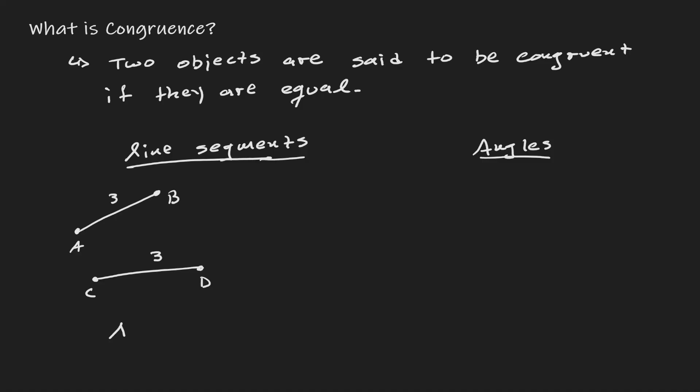This is how we express it. AB — remember that the symbol we use for congruency is an equal sign with a squiggly line on top of it — AB is congruent to CD.